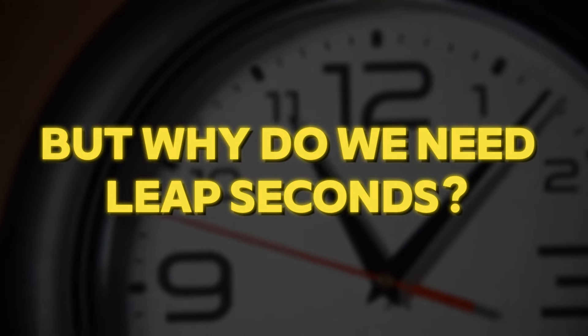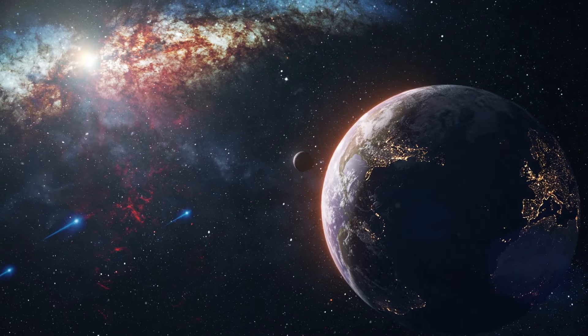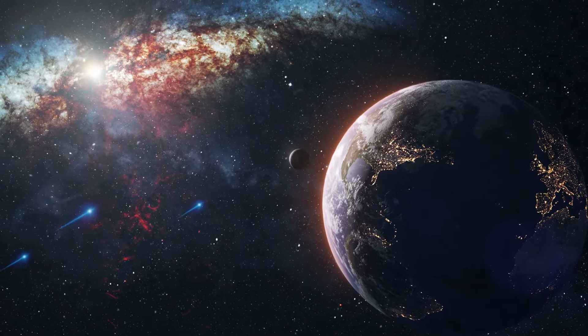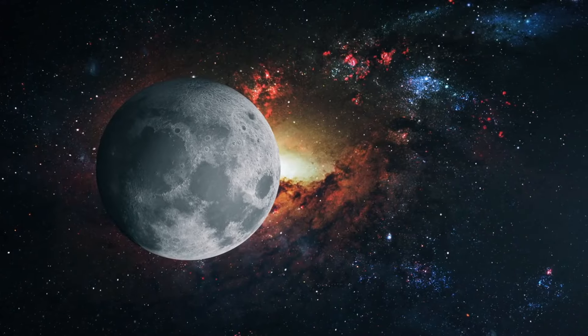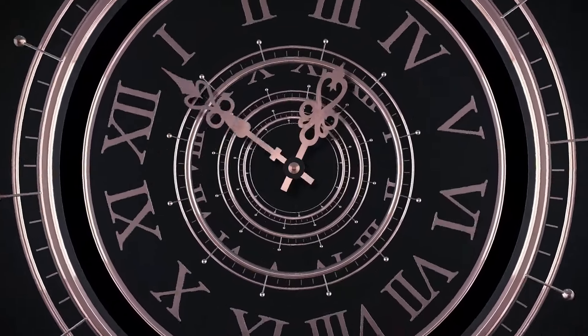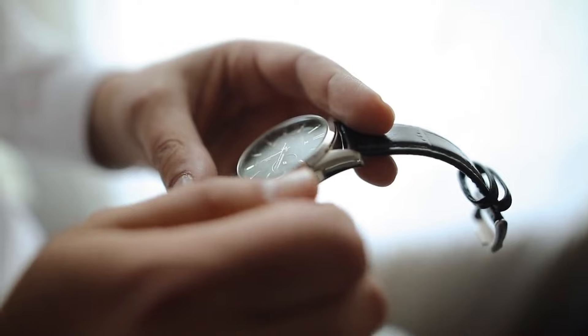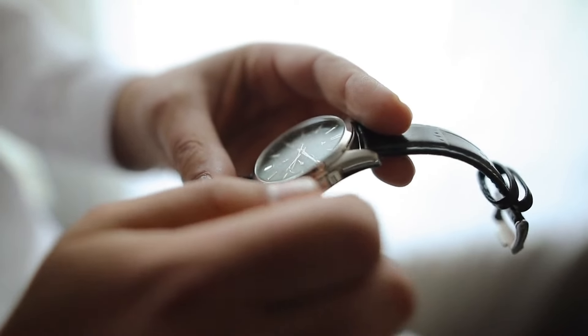But why do we need leap seconds? Our planet doesn't rotate at a constant speed. It fluctuates due to various factors like the gravitational pull of the moon and the movement of its molten core. To ensure that our timekeeping is accurate, leap seconds are added or subtracted to account for these variations. Without them, our clocks would gradually drift away from solar time.